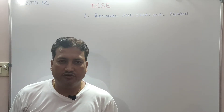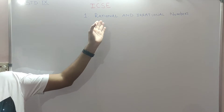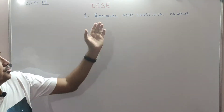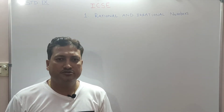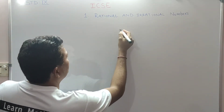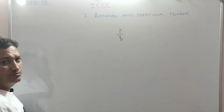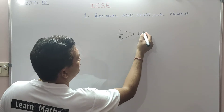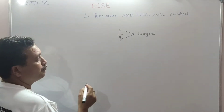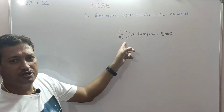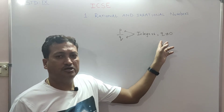Today we will learn the first chapter of ninth standard — rational and irrational numbers. First of all, we'll try to understand what is a rational number. A number which can be expressed in the form of P upon Q, where P and Q both are integers but Q should not be zero.